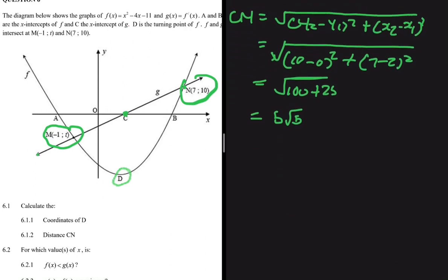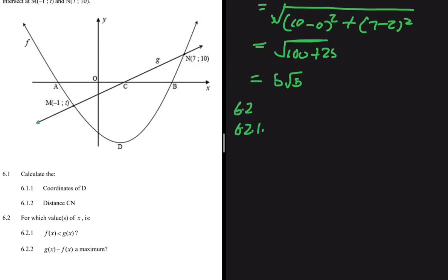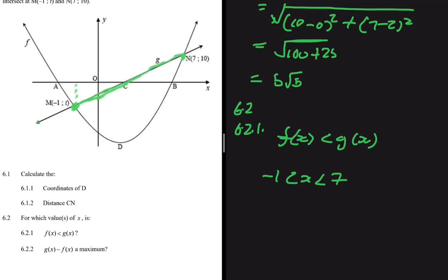Now let's do 6.2.1: for which values of x is f(x) < g(x)? We're looking for x values where g(x) is above f(x). We can see on the graph that between the x value of M and the x value of N, g(x) is above f(x). So the answer is from x = -1 to x slightly less than 7.